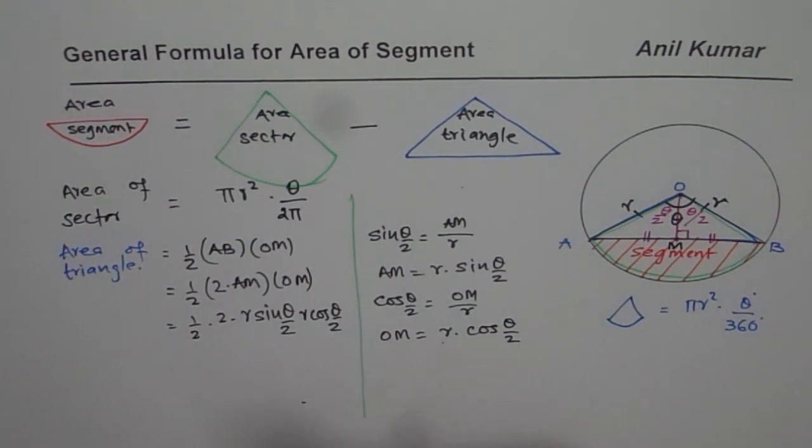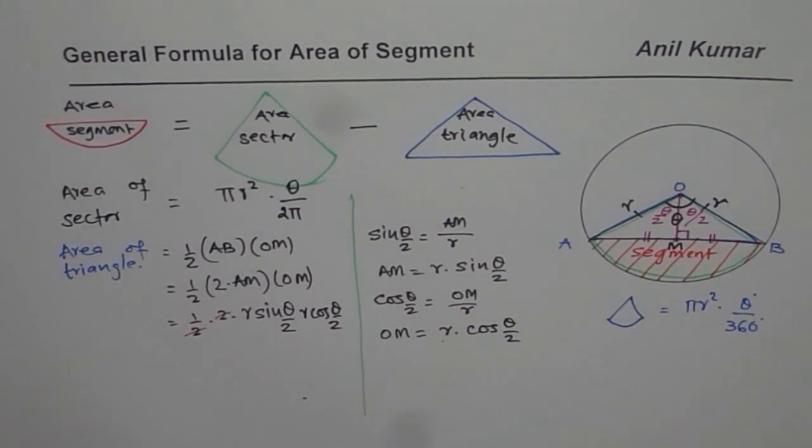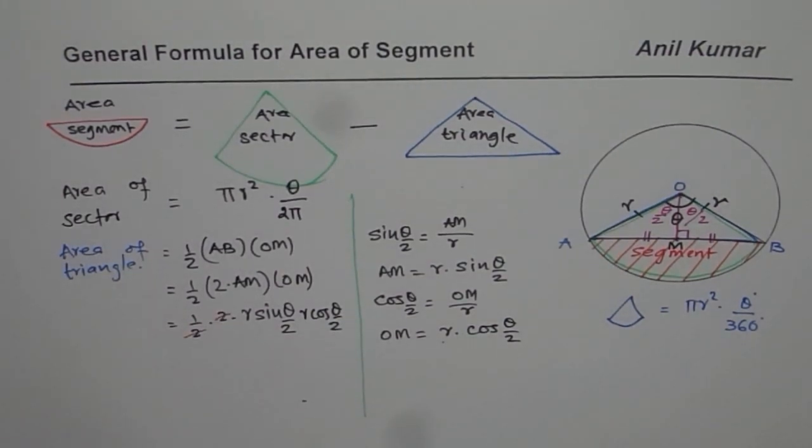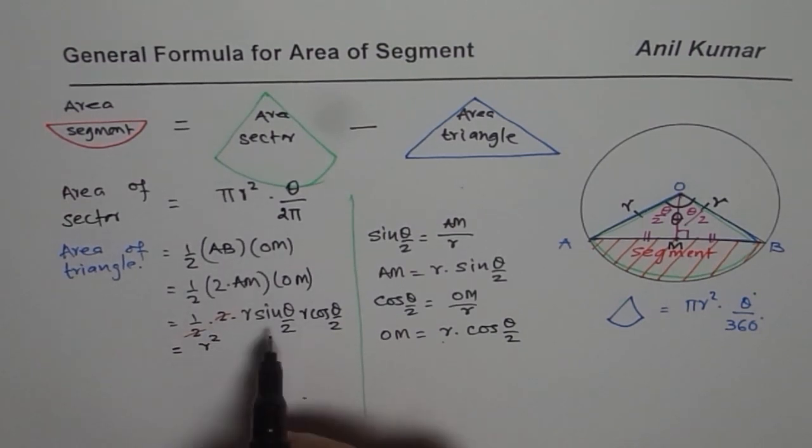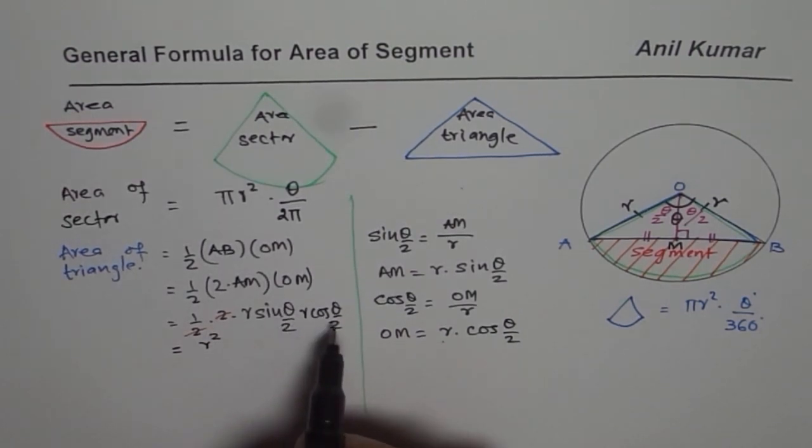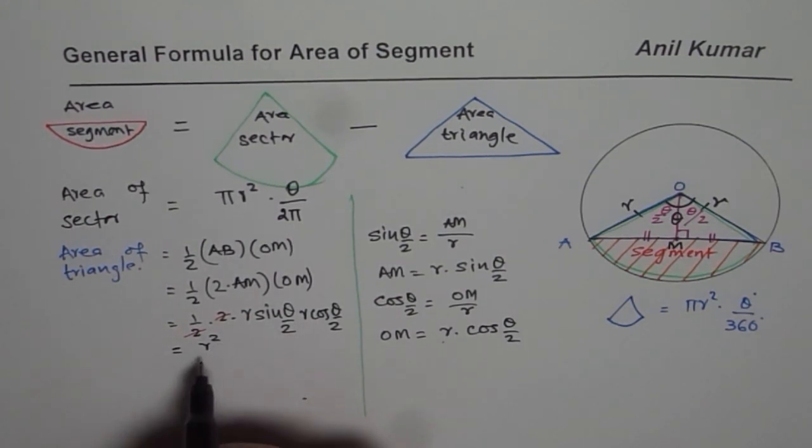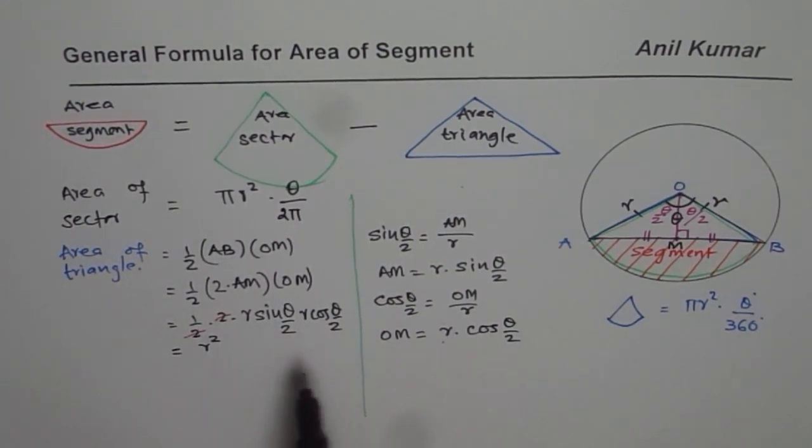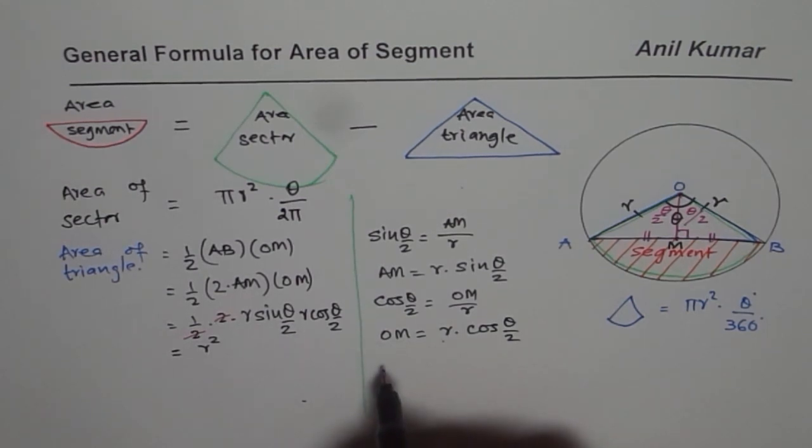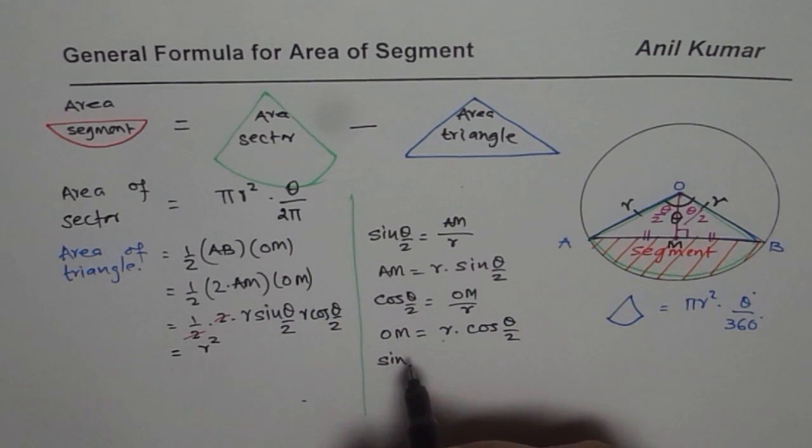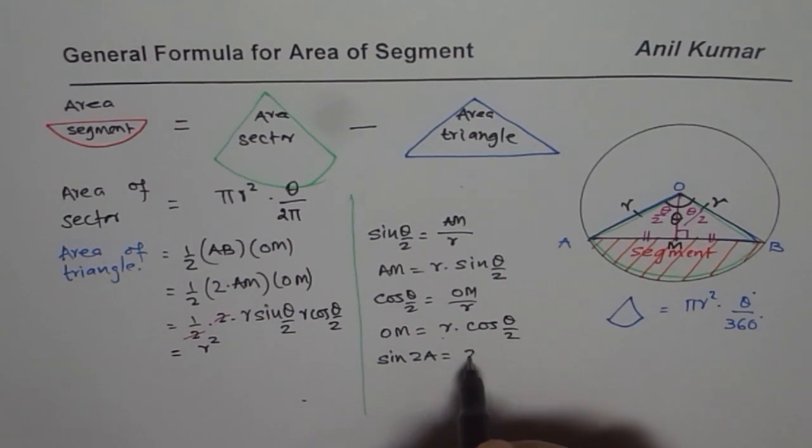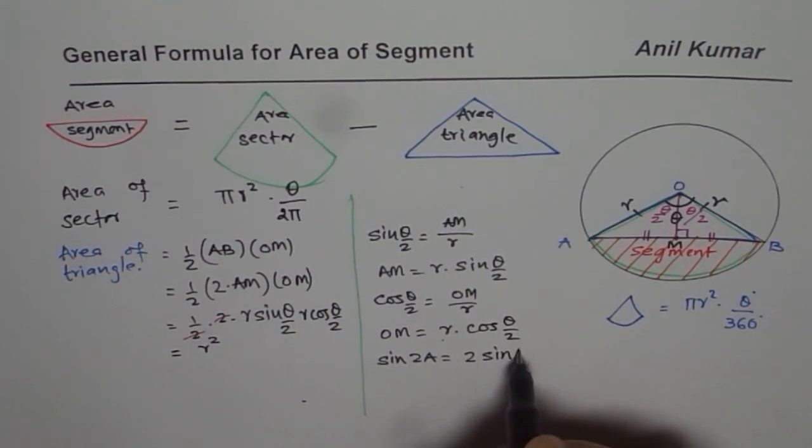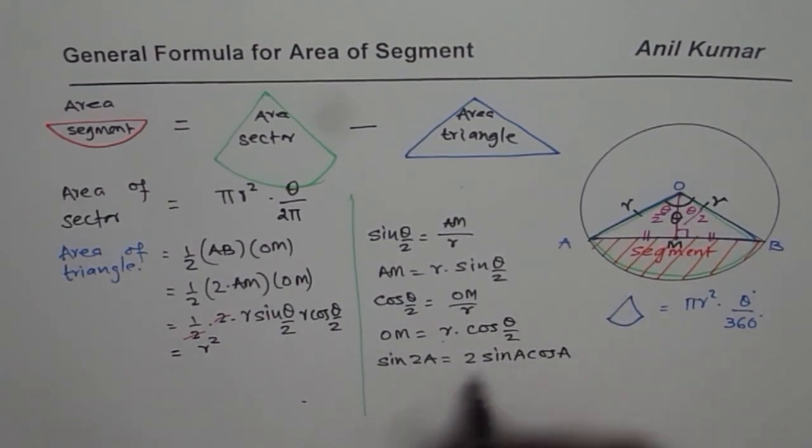So now we can simplify this. And then write down the formula itself, which is equal to r square sine theta by 2 times cos theta by 2. Let me use one more relation here. We know sine 2a equals to 2 times sin a cos a.